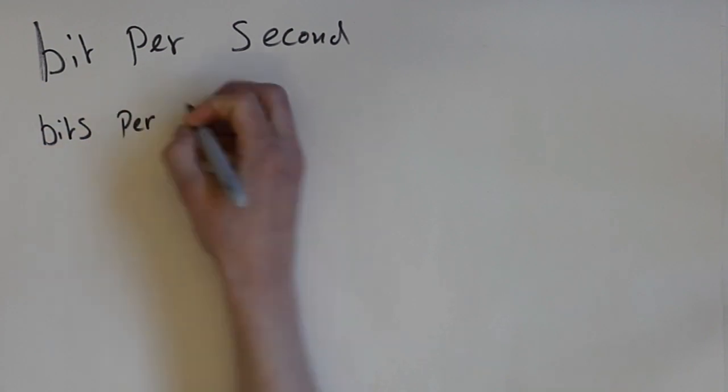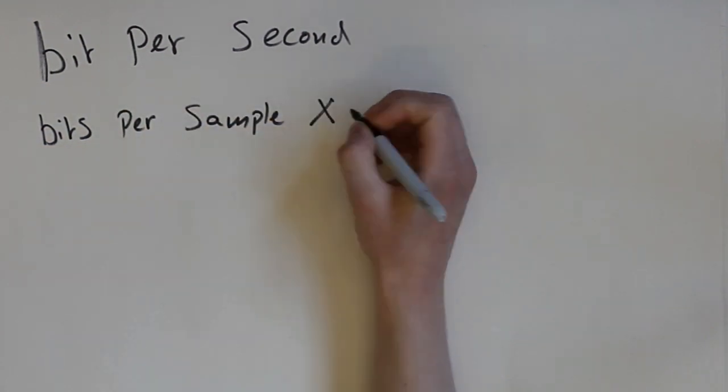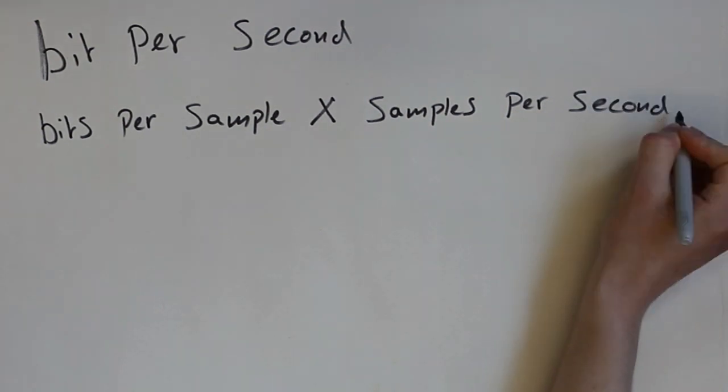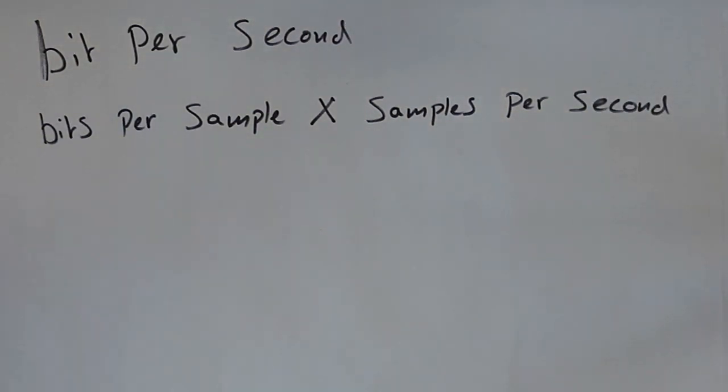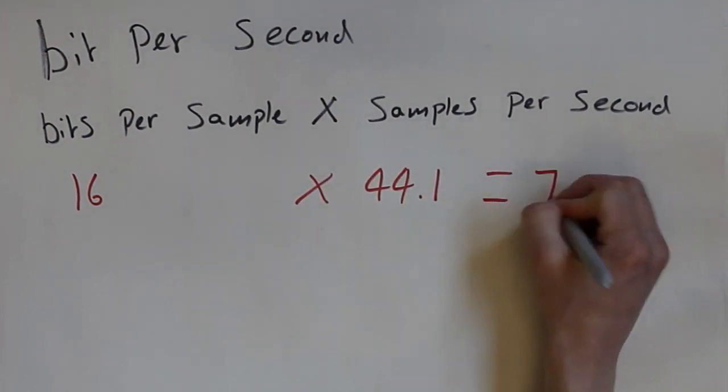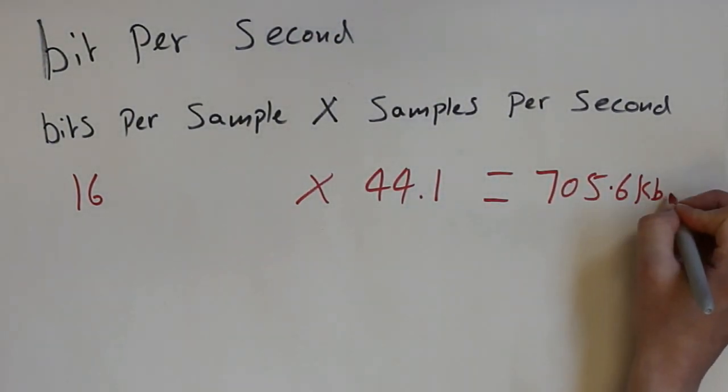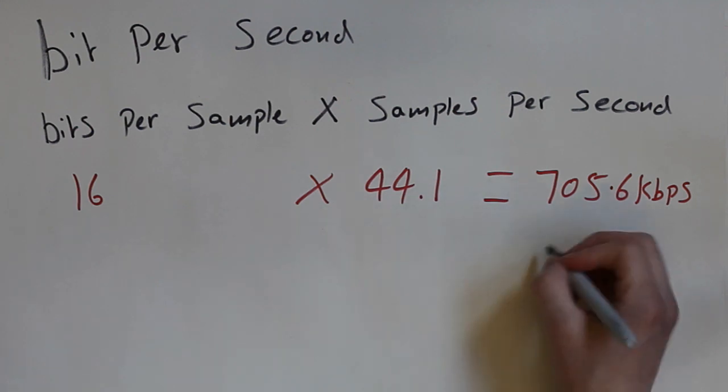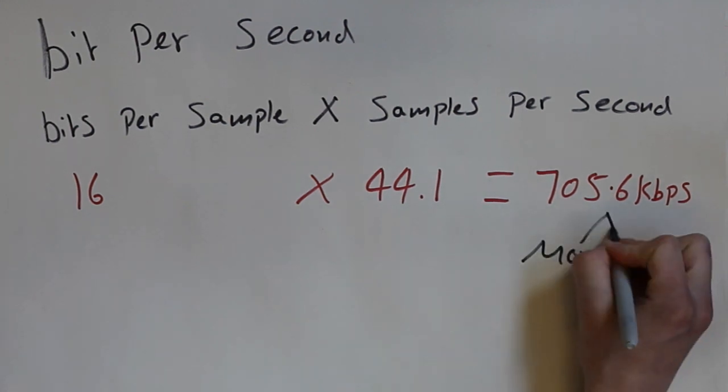To find the number of bits per second in audio, you simply multiply the number of bits per sample with the number of samples per second. So 16 bit 44.1kHz audio would be 16 multiplied by 44.1, which is 705.6 kilobits per second. The kilo just represents 1000, and that makes calculations like this a bit simpler because you're using smaller numbers this way.